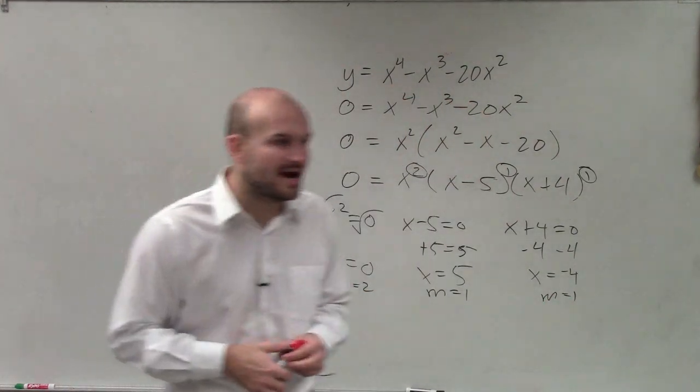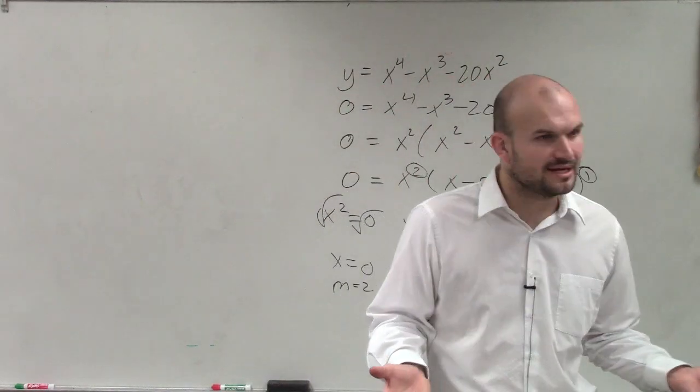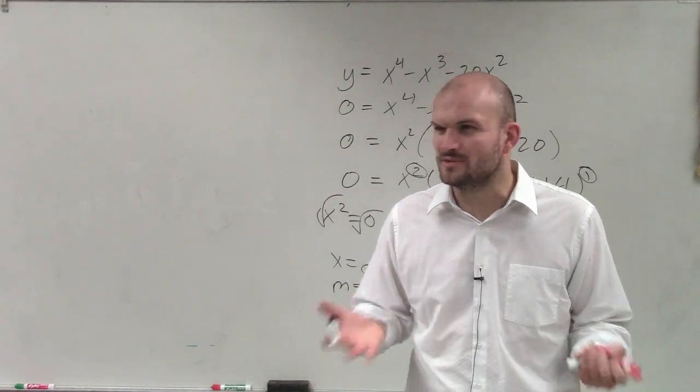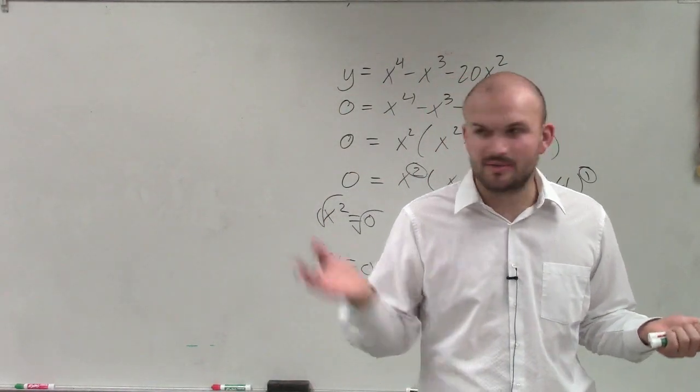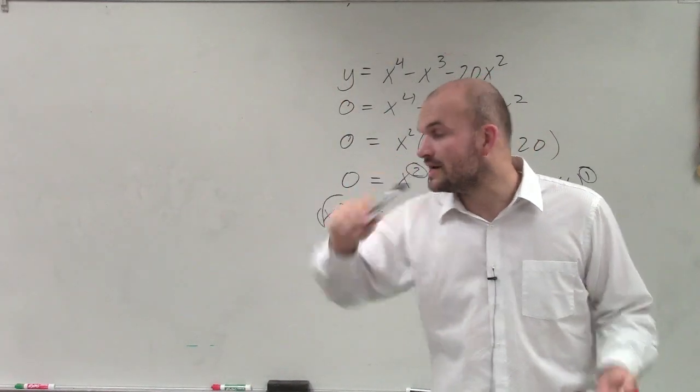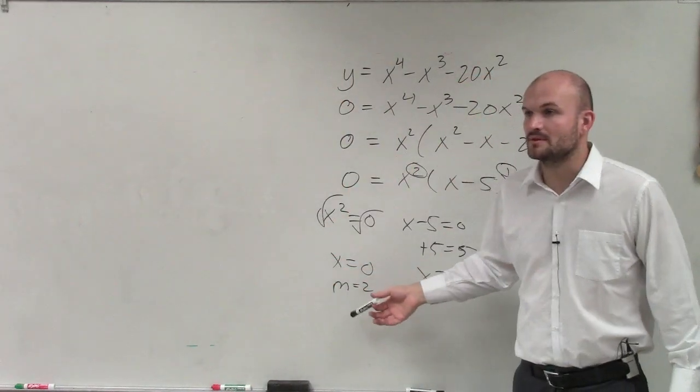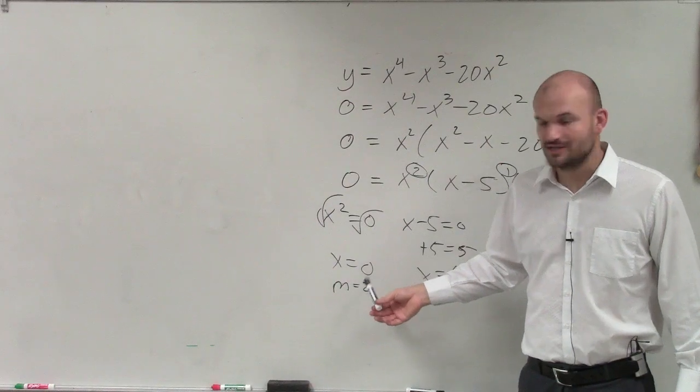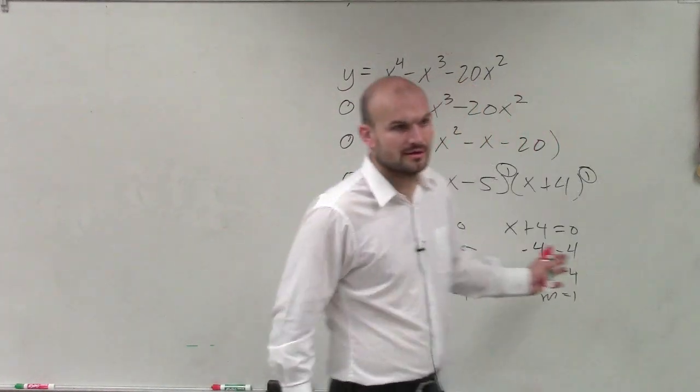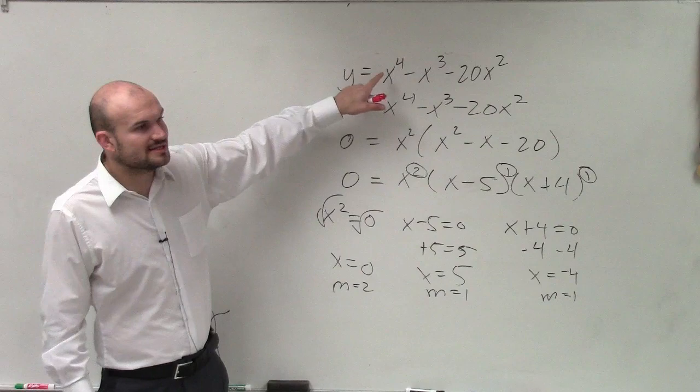If graphing this, what does multiplicity tell us about the zeros? Multiplicity 2 means the graph touches and rebounds at the x-axis. Multiplicity 1 means the graph crosses the x-axis.